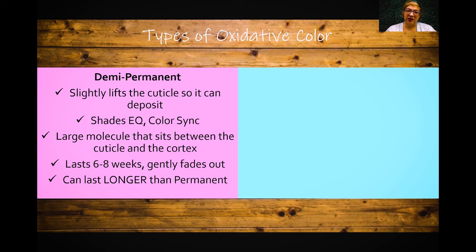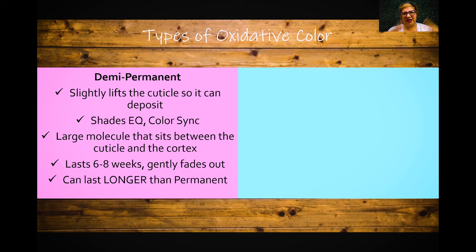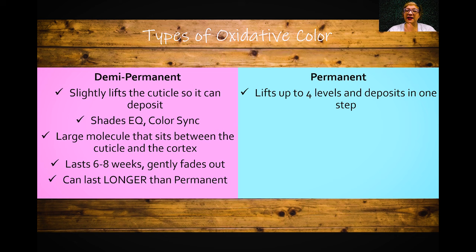It's important to know that demi-permanent can actually last longer than permanent color. You're not damaging the hair with demi-permanent, whereas permanent color permanently alters the inside of the hair. Permanent color doesn't last forever partly because ammonia and hydrogen peroxide break down the cuticle layer, so the hair can't hold on to color anymore. Demi-permanent doesn't do that — so if you're going darker and not trying to cover gray, demi-permanent is actually going to last much longer.